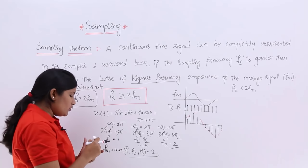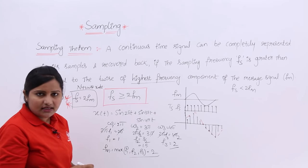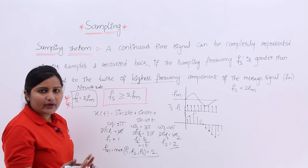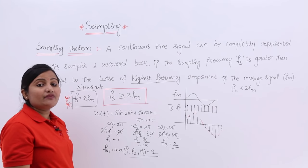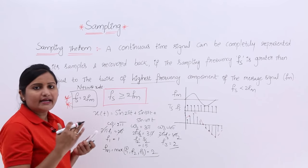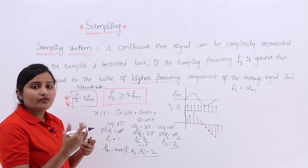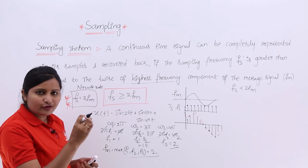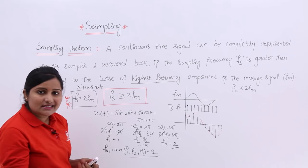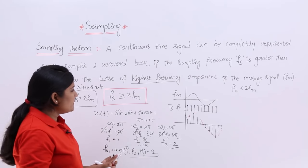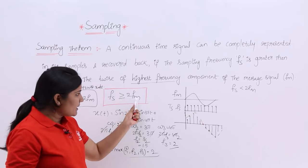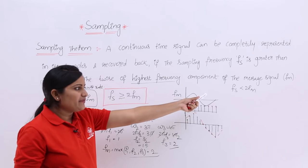If the highest frequency component is 2 Hz, then the Nyquist rate = 2fm = 2 × 2 = 4 Hz. That means at least 4 Hz sampling frequency is needed to convert a 2 Hz signal into its discrete form. If you violate the Nyquist sampling theorem — that is, if fs < 2fm — problems arise.